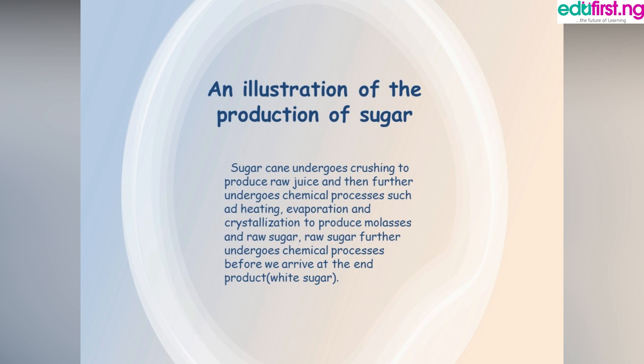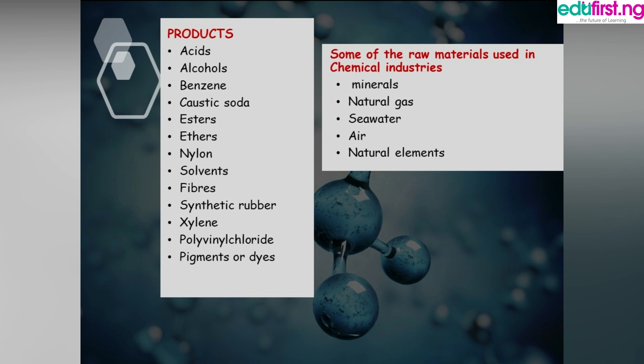Raw sugar further undergoes chemical processes before arriving at the end product — white sugar. We should note that chemical industries use raw materials; products don't just appear. They start from raw material and move through stages: primary products, secondary products, and tertiary products. Raw materials used in chemical industries include minerals containing certain elements or metals, natural gas, sea water, air, and natural elements.